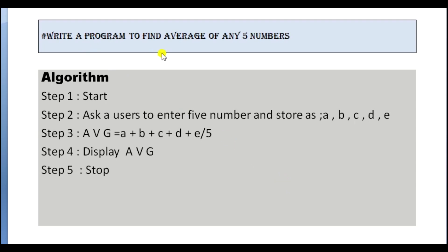Likewise, in another program: write a program to find the average of any five numbers. In algorithm — Step 1: Start. Step 2: Ask the user to enter five numbers and store as A, B, C, D, and E. Step 3: Average equals A plus B plus C plus D plus E, divided by 5. This is the formula to find average. Step 4: Display average. Step 5: Stop the program.